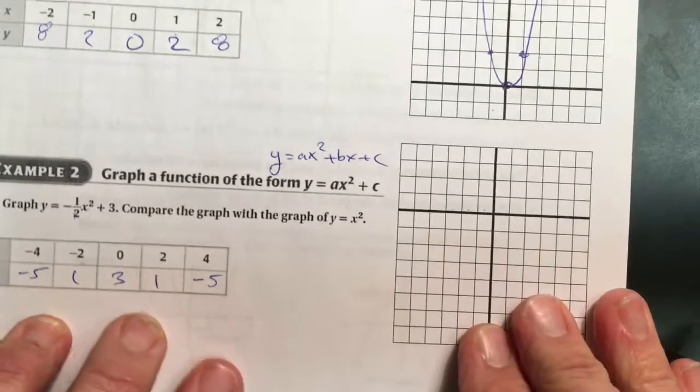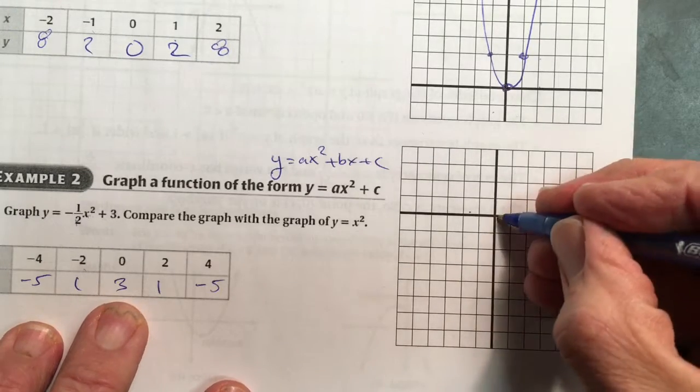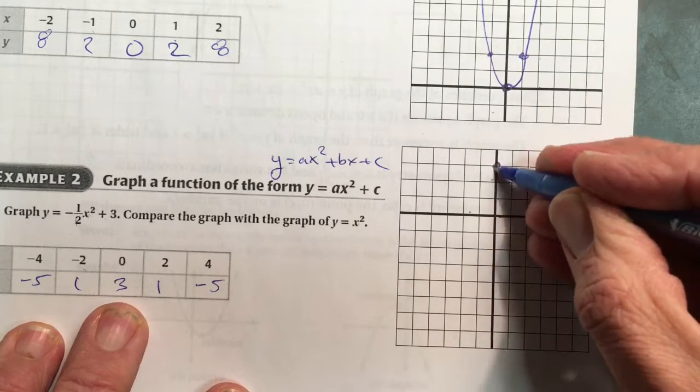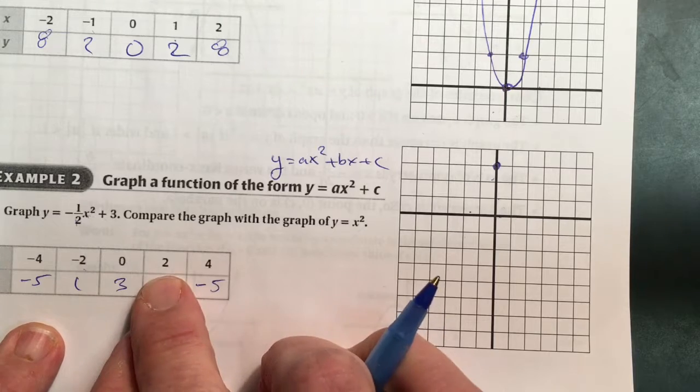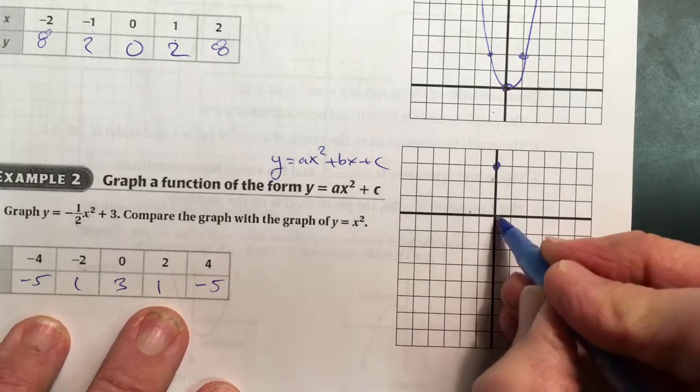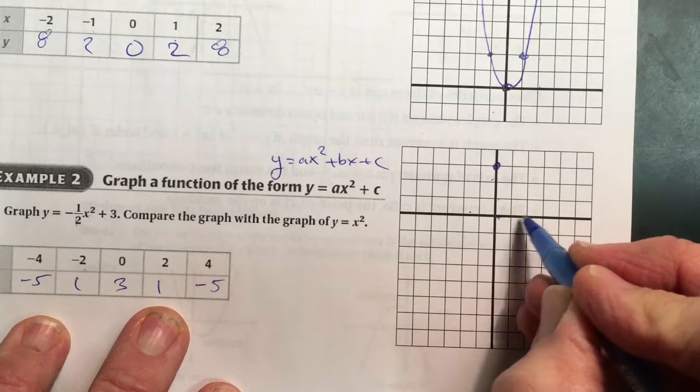Now I can graph these in our graph. So 0, 3. Here's 0, 1, 2, 3. And I can go out to 2 and positive 1. Everything starts from the origin. It's over 2, up 1.